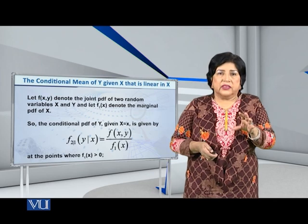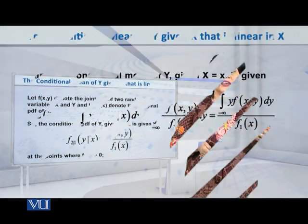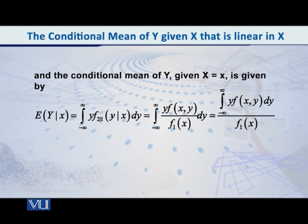Now, given all this that I have just said, let us consider the conditional mean of Y given X equal to small x. So, expected value of Y given small x will be equal to the integral from minus infinity to infinity of y multiplied by f₂|₁(y|x), simply f of y given x. And this integral is to be with respect to Y.